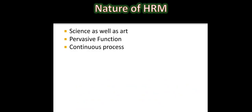Next, HRM is a continuous process. It is a process because there are a number of functions to be performed in a series, which begin with human resource planning, then recruitment, selection, training, and performance appraisal. The HRM process includes acquisition, which involves HR planning, recruitment, selection, placement, and socialization.